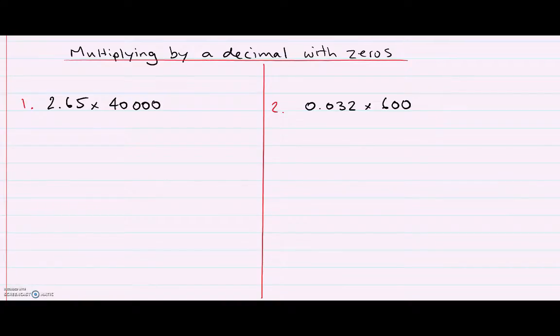Here are my two examples for multiplying by a decimal that has some extra zeros in it. This first example is 2.65 times 40,000.